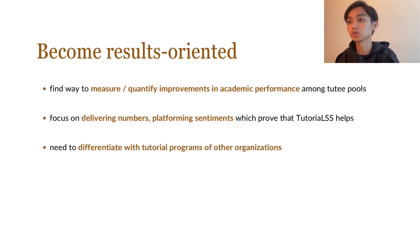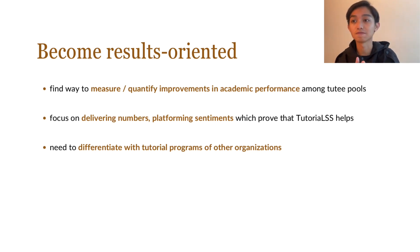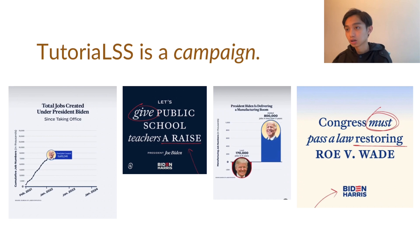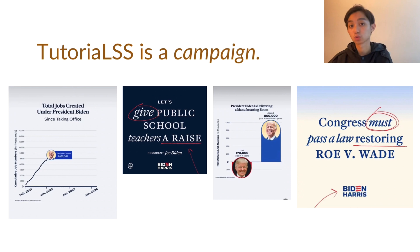Number three, we need to differentiate with tutorial programs of other organizations. That also means we have to put into writing the advantages that we have over other organizations. To do all those things, we have to keep in mind that tutorials should be a campaign. I took these publication materials from the Biden-Harris campaign as an example — essentially, you can use numbers and graphs to really send a message that tutorials works.